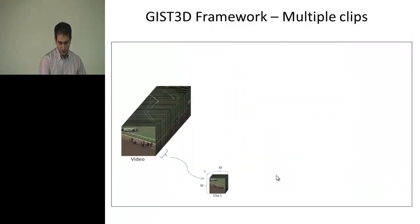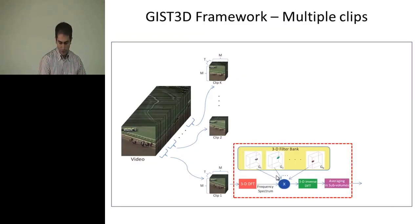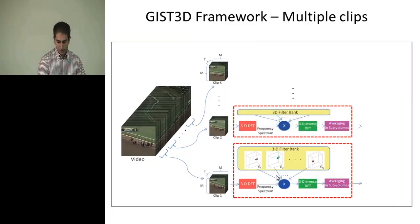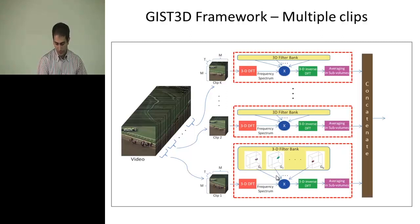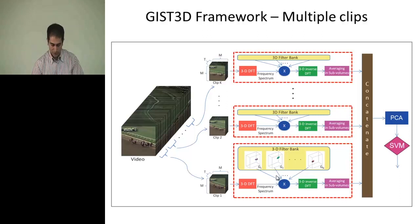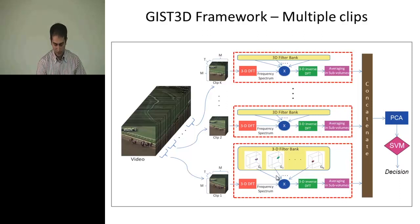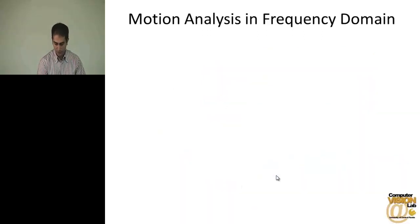When we have a longer video, we use K clips of it. We use the same descriptor computation block for each clip, then concatenate them, apply PCA, and train our support vector machine.